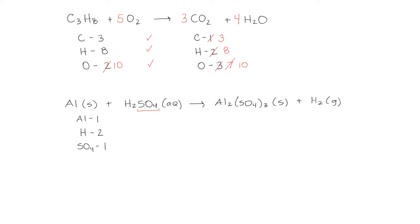That might make things a little bit easier for us. On the right side we have 2 aluminum, 2 hydrogen, and 3 sulfate groups. Let's start with the aluminum. We have 1 on the left side and 2 on the right side. So let's put a 2 in front of the aluminum, giving us 2 aluminum on the left, 2 aluminum on the right, and that is balanced.